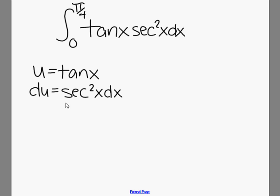Since this is a definite integral, we're going to want to change our limits to coincide with the u that we chose. So the bottom limit is 0. We plug that into u equals the tangent of 0, and from our unit circle, we know that equals 0.